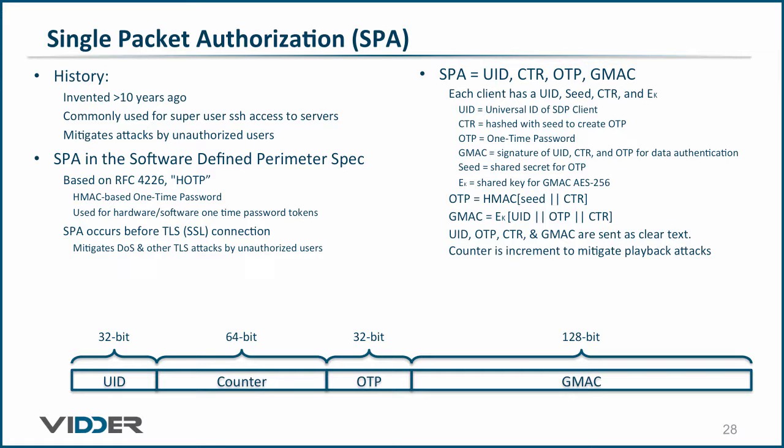In order to create the one-time password and the GMAC, the client must also have a seed, which is a shared secret used to create the one-time password, and an encryption key, which is a shared secret used to generate the GMAC. The formula for creating the one-time password is a simple hash applied to the seed concatenated with the counter. The GMAC then authenticates the data using the Galois counter-mode algorithm with the UID, OTP, and counter as additional data.